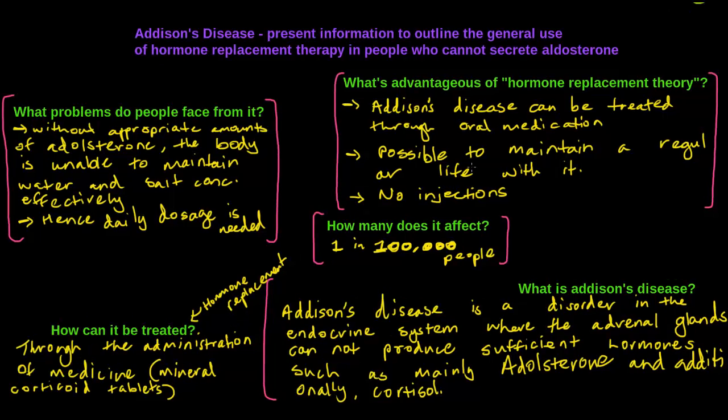There are some problems that people face with Addison's disease, and that's mainly that without appropriate amounts of Aldosterone the body is unable to maintain water and salt concentrations effectively. Aldosterone is the main thing that helps us retain or excrete sodium depending on what we need, and in general it helps maintain water and salt concentrations. So in Addison's disease, without that hormone, obviously the body can't do that — and that's the biggest problem people face. Because of that, they have to take a daily dosage of a tablet as part of hormone replacement therapy.